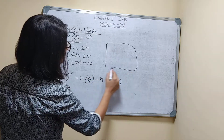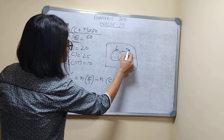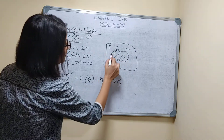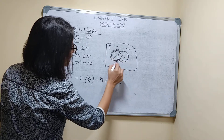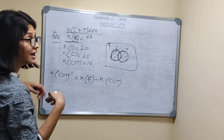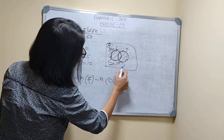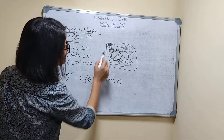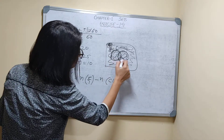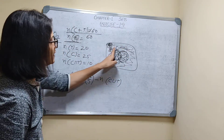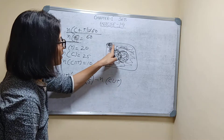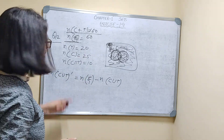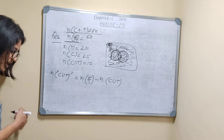Looking at the Venn diagram: C∪T represents students who play either or both games. The region outside C∪T — meaning N(ε) minus N(C∪T) — gives students who play neither cricket nor tennis. Using the formula: N(C∪T)′ = N(ε) − N(C∪T) = N(ε) − [N(C) + N(T) − N(C∩T)].